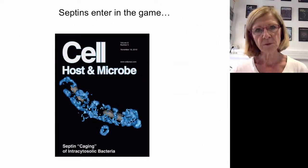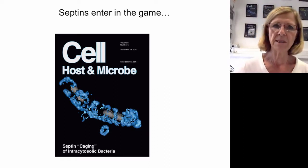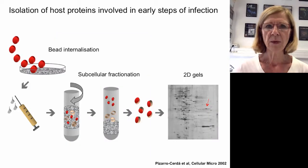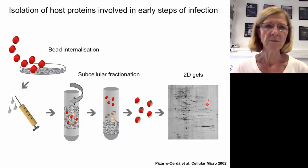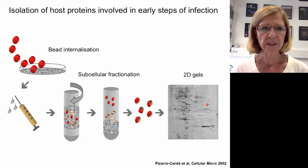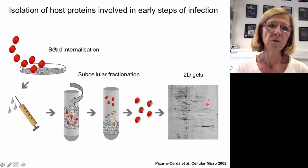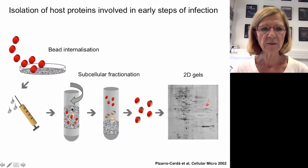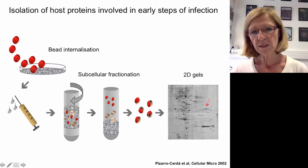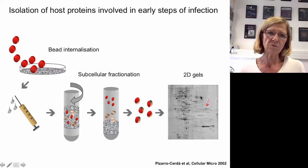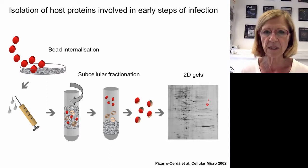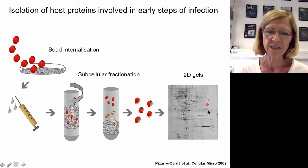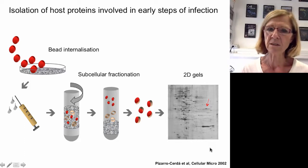The field was slowing down when septins entered the game. We had been trying to decipher host proteins involved in early steps of infection using beads coated with either InlA or InlB that could enter cells. We purified the vacuoles containing these beads and performed 2D gel electrophoresis to identify associated proteins. We found a protein present in the InlB vacuoles that was identified by mass spectrometry as a septin.